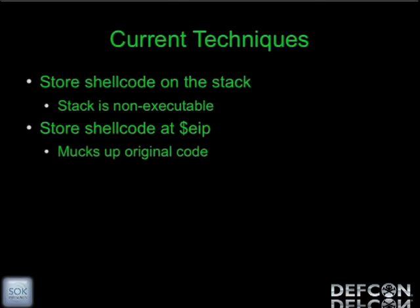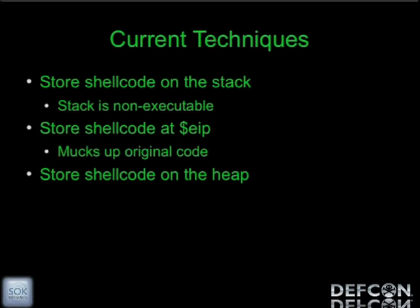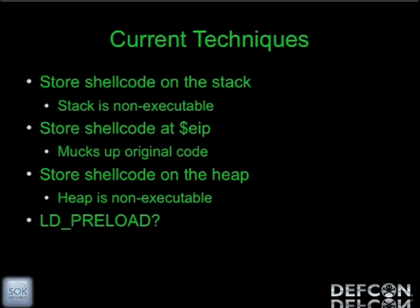The problem with the EIP technique is you get your shellcode to run only once. But we need our malicious code to run every time that string 'GET /shell HTTP/1.1' is sent — multiple times, not just once. We could store the shellcode on the heap, but the heap on many systems today is also non-executable. You could use LD_PRELOAD, which would be a great technique, but that requires root and the process has already started. Apache is already running, and you really don't ever need to root a box unless you're doing something extreme.